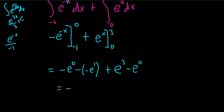So this is equal to negative 1 plus e plus e cubed minus 1. e to the 0 is 1. So let me write them in order of descending powers. So it'll be e cubed plus e minus 2. And that is the final answer.